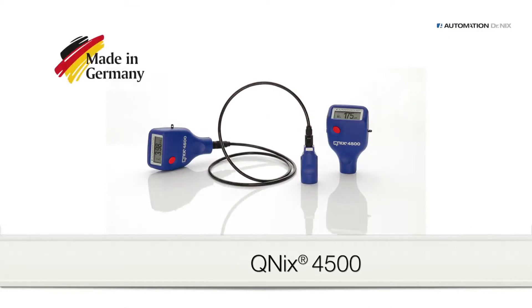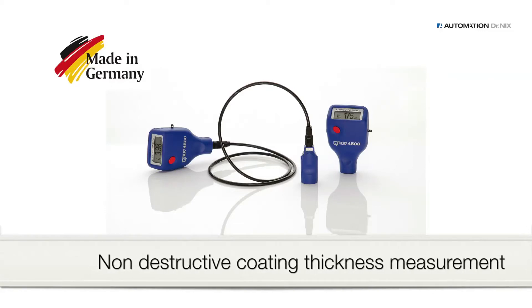QNIX 4500, one of the best-selling coating thickness measuring gauges worldwide. Accurate measurements on metal surfaces made easy, whether it's iron or aluminum.